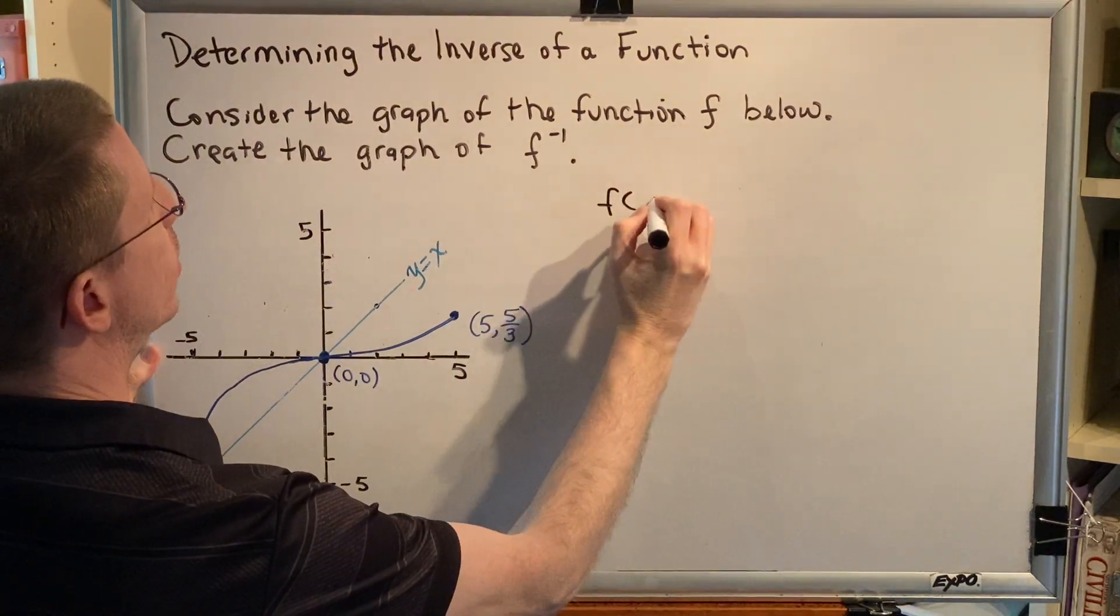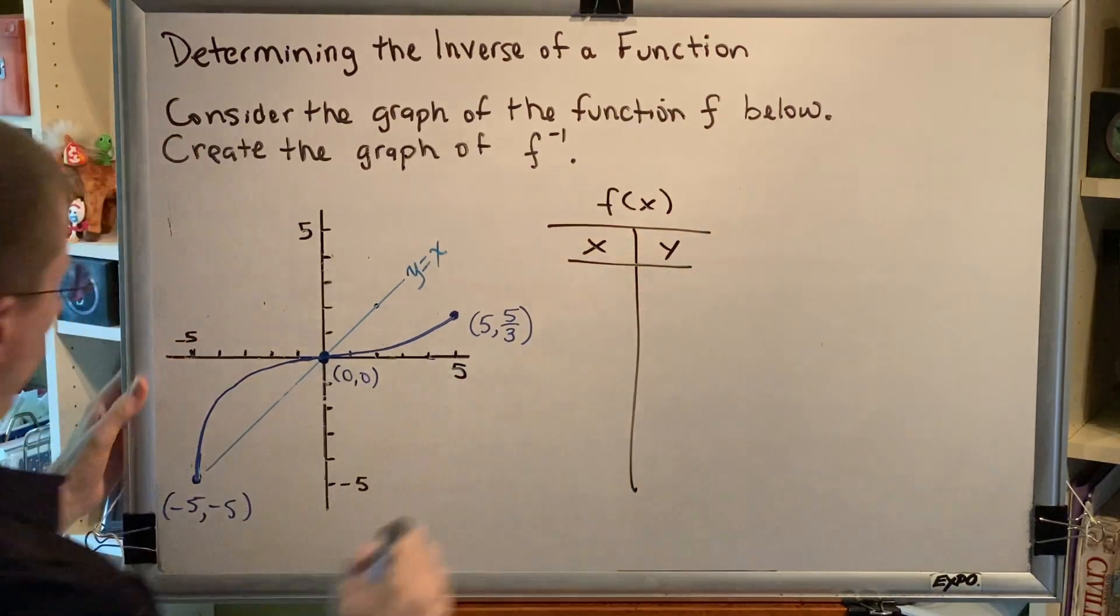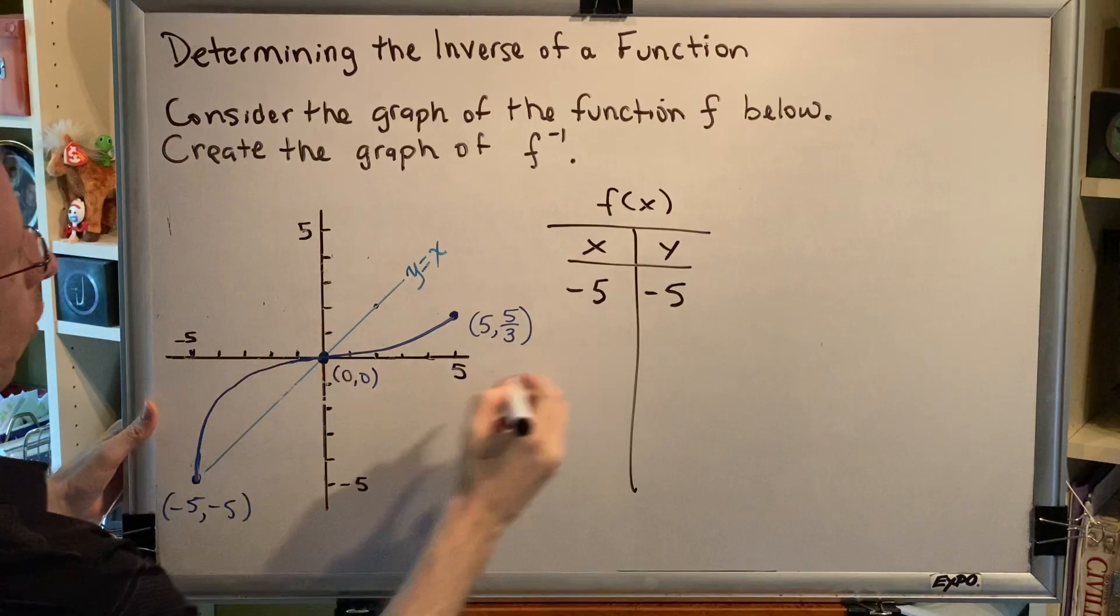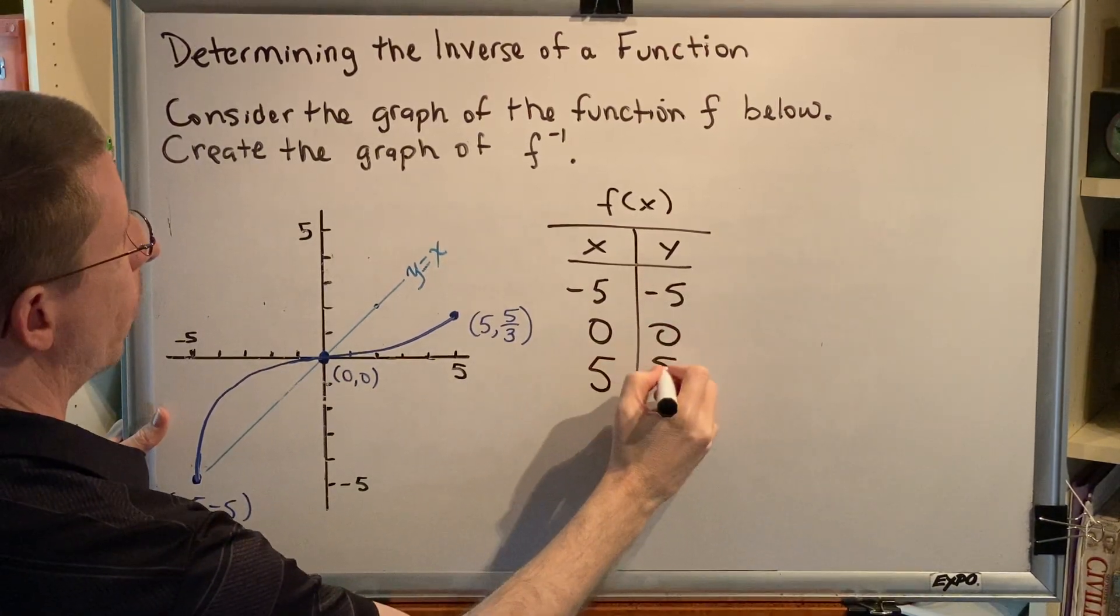The first thing we're going to do is make a collection of the points that are on f of x. We have this point, negative 5, negative 5. We have this point, the origin, 0, 0. And we have this point, 5, 5 thirds.